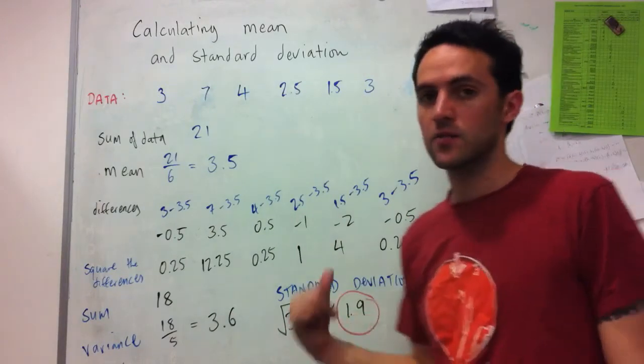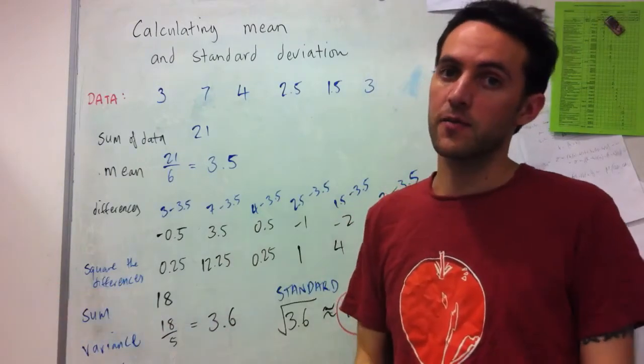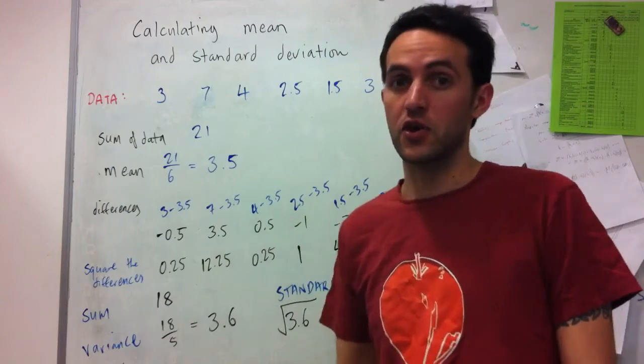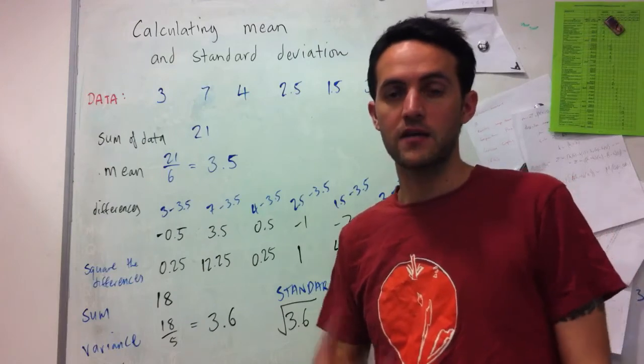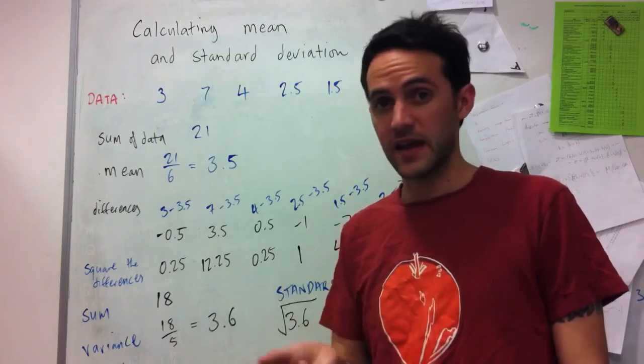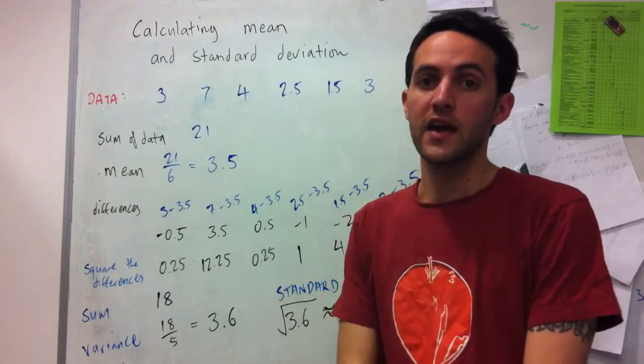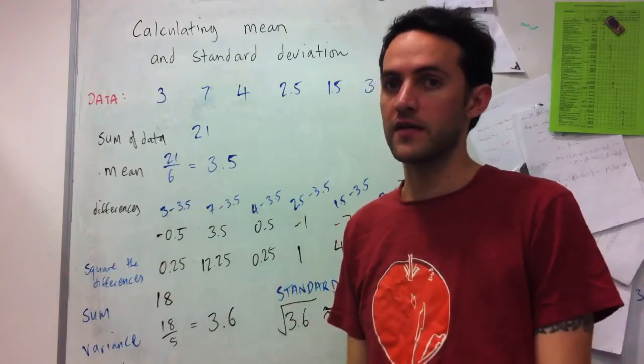If the standard deviation were much smaller, so if we had a big data set, and we had an average of 3.5, but we had a standard deviation of say 0.02, so 2 hundredths. Then in that case, we can sort of say the average is 3.5, the standard deviation is very small. So really, the 3.5 gives quite a good representation of the overall data set.